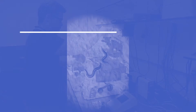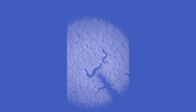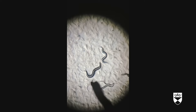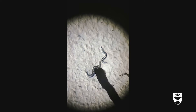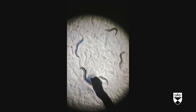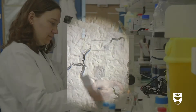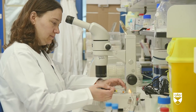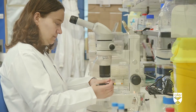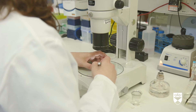These worms are not your everyday garden worm, but a nematode worm called Caenorhabditis elegans, or C. elegans for short. Even though they are small — only one millimetre in length — they help scientists in Dundee understand the earliest stages of creating new life.